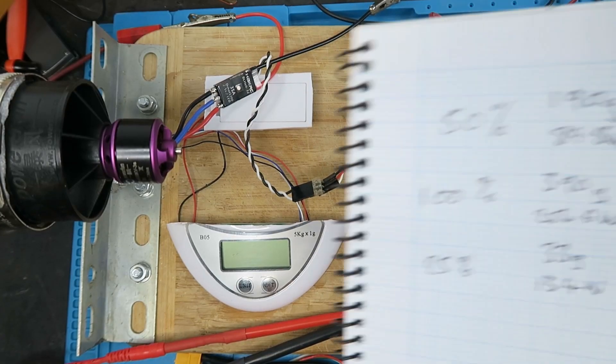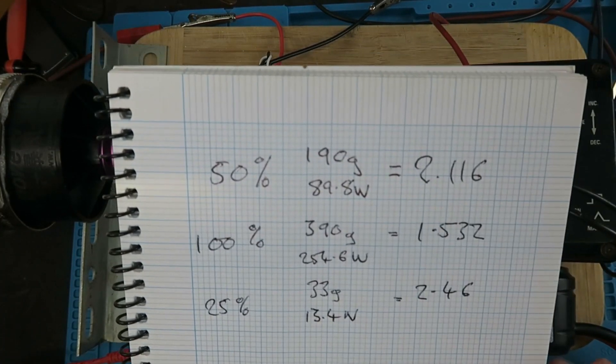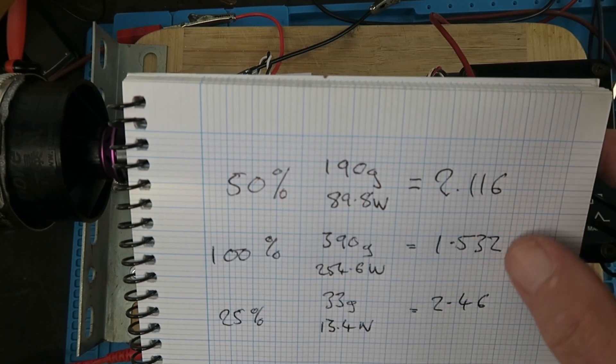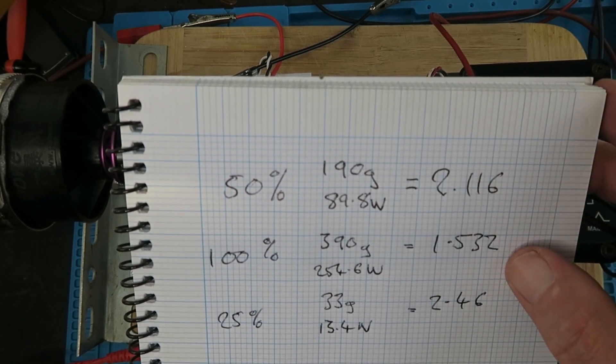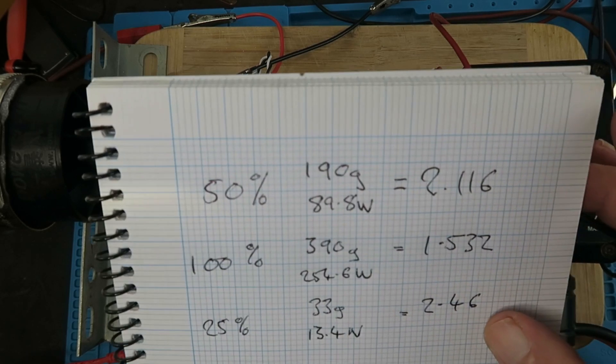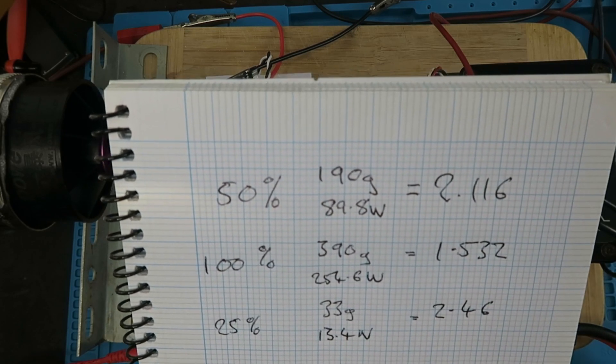So the results are in. At the 50% throttle mark we end up with a figure of 2.116, but at 100% that drops down to 1.532. I did another test at around 25% throttle and got 2.46, so clearly this is happier at lower throttle settings.